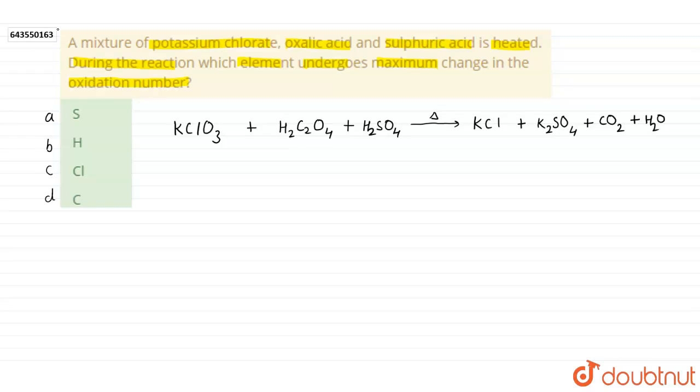To know which element undergoes maximum change in the oxidation number, we have to write the ionic reaction.